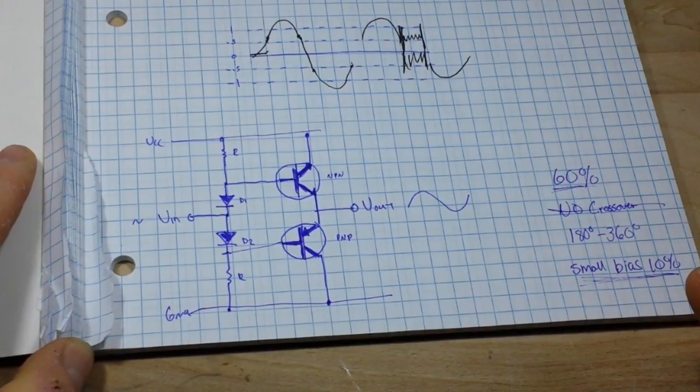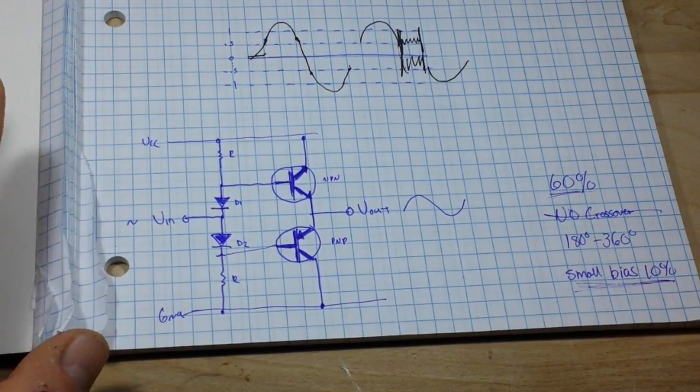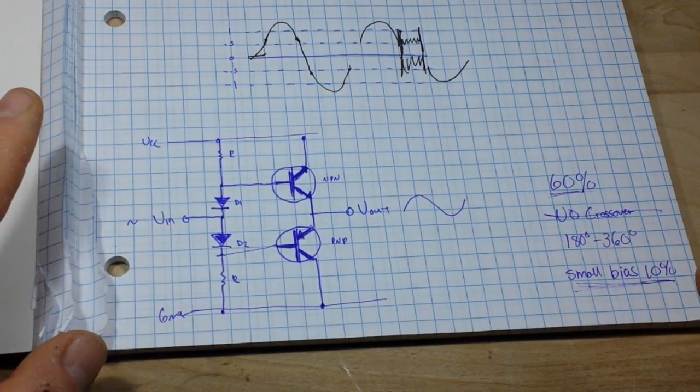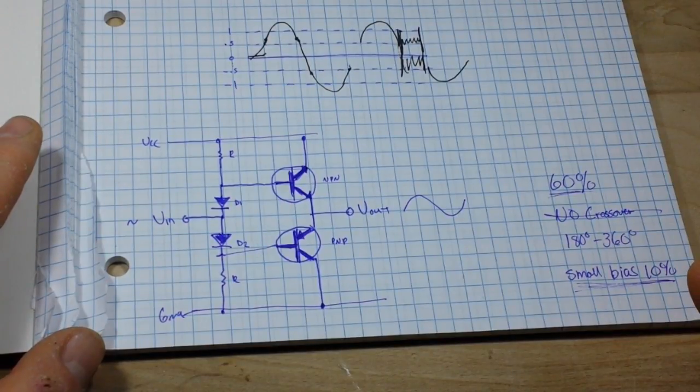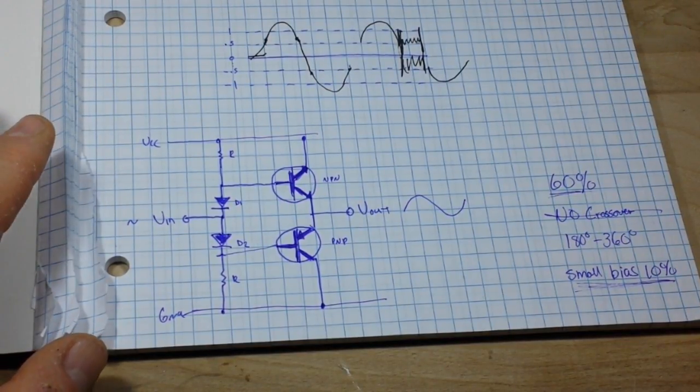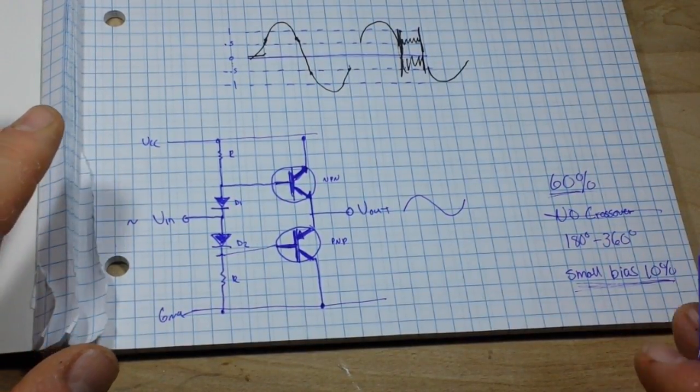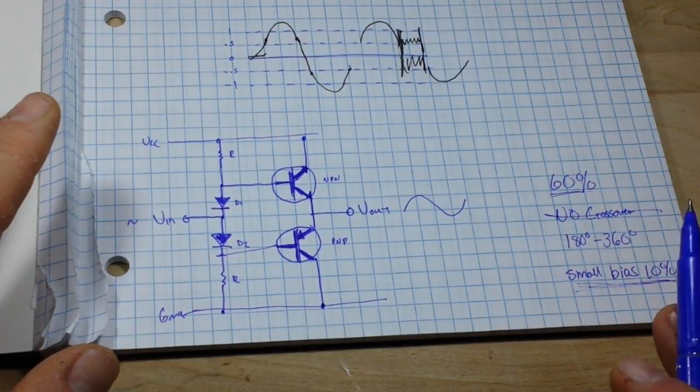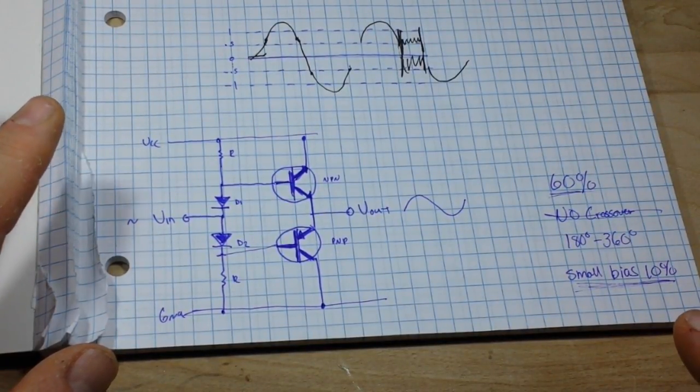So this is a really good compromise for audio amps. Of course, the A is going to give you the most gain, the B is going to be more efficient, the C is the most efficient of all, but when we get to the C you'll see why it's not great for audio.